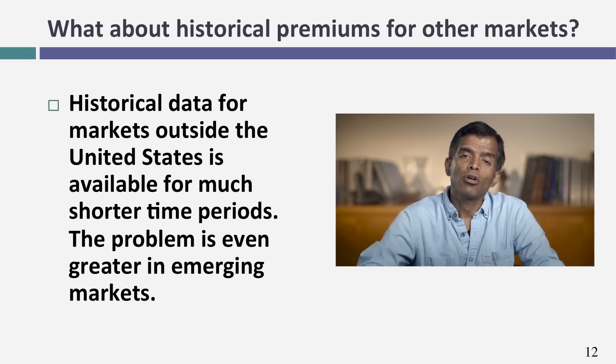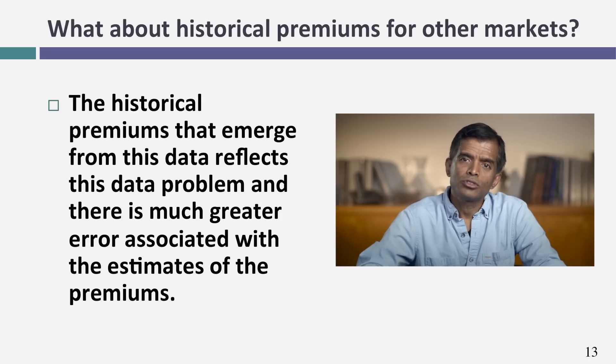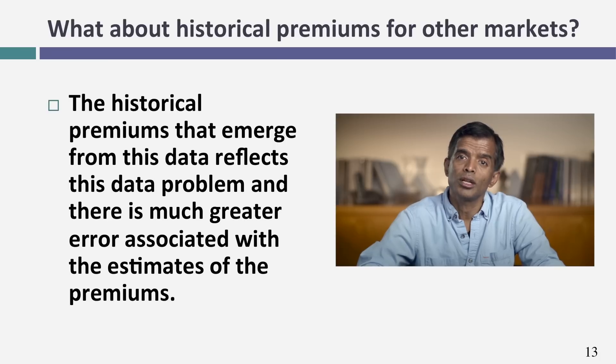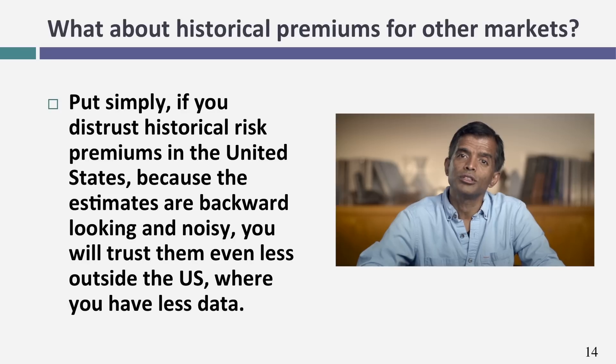That uncertainty applies to the US, where you have a lot of history. In markets like India, China, and Brazil, you may not even have 20 years of history, let alone 80. Historical risk premiums outside the US are often close to useless because the historical data just isn't there. There is a Credit Suisse study run by the London Business School that looks at equity risk premiums over the last 100 years in about 20 different markets — a very good historical risk premium study. But even with 100 years of data across multiple markets, the standard error remains at about 2%.